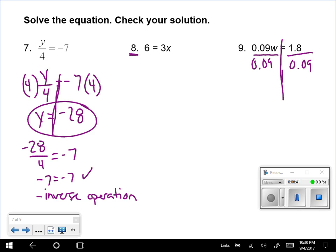So 1.8 divided by 0.09. You can use a calculator if need be. You will be allowed to use a calculator quite often in this unit. If you remember how to divide like this, that would be awesome too.